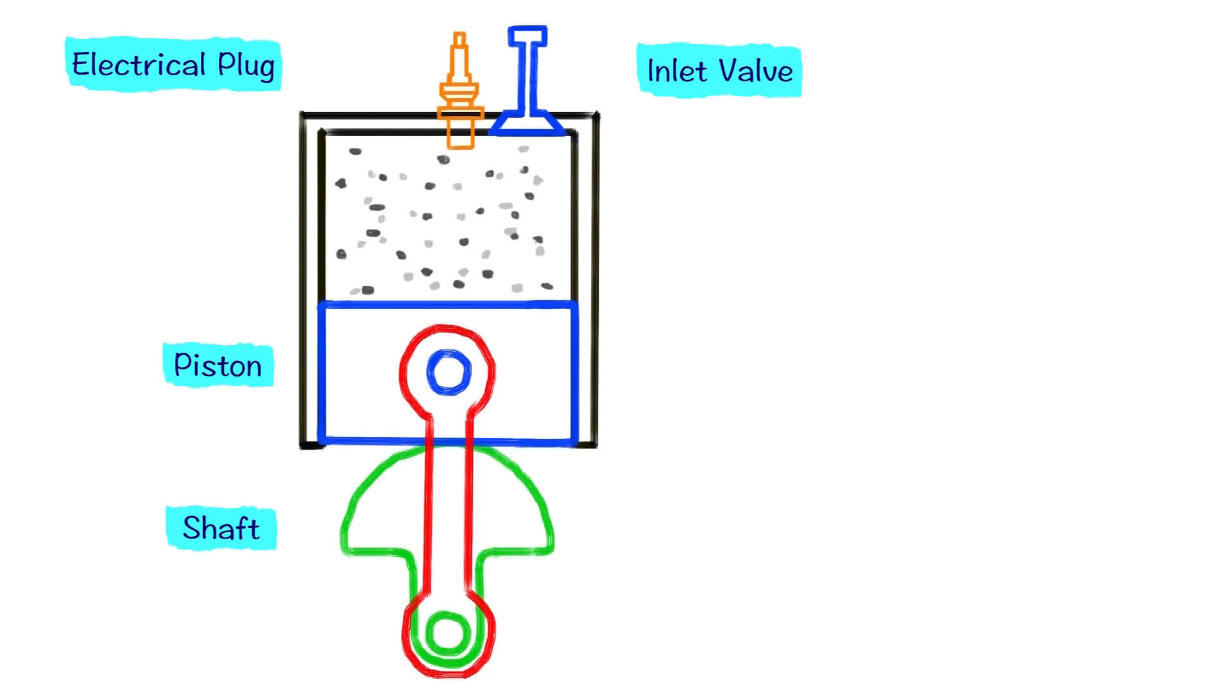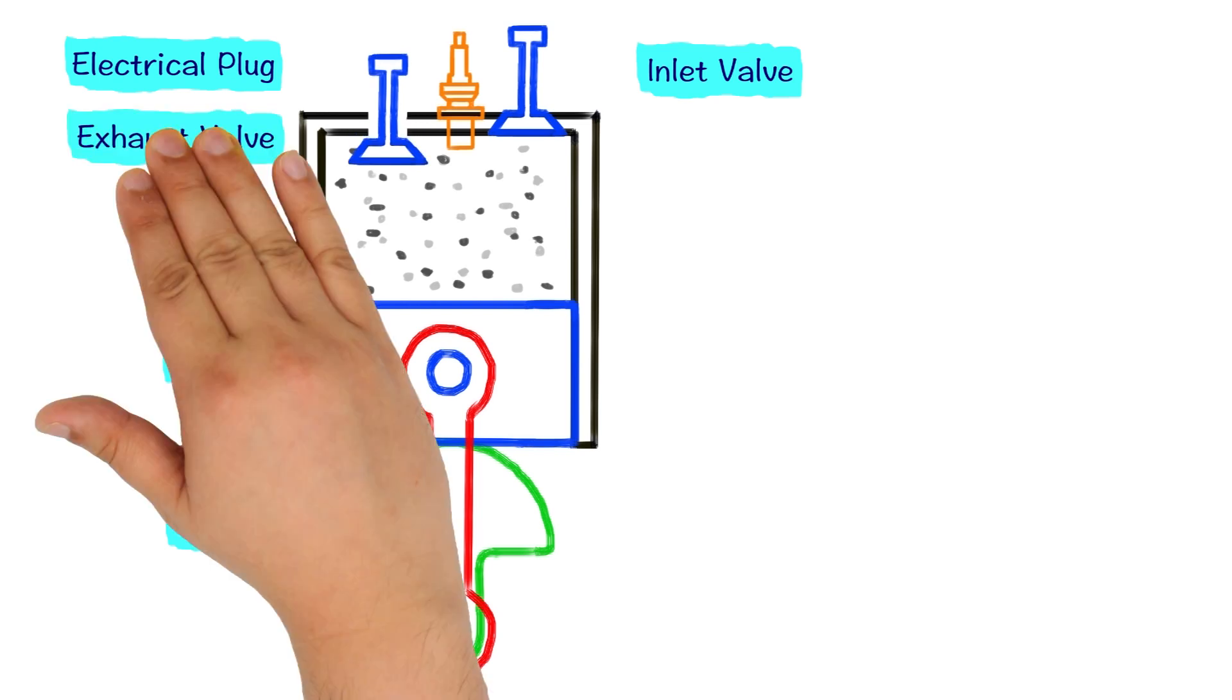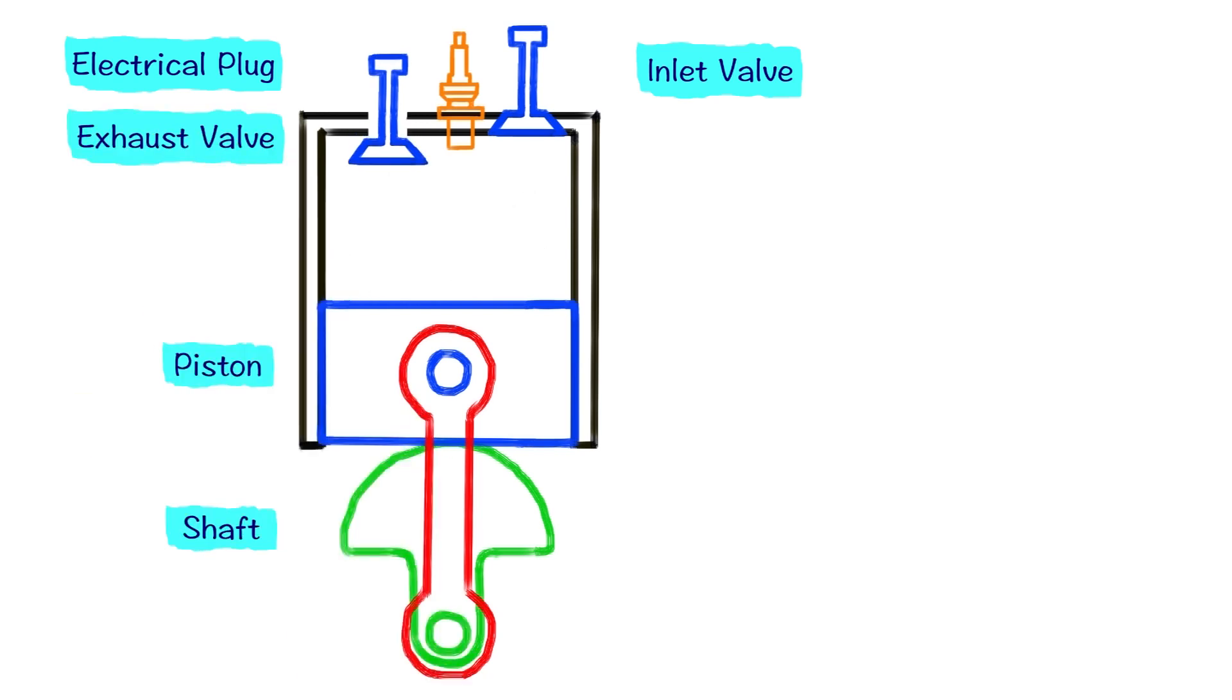So let's get rid of all these gases first. How can we do that? Well, we can design it in a lot of different ways, but let's just have another valve in the cylinder to get rid of all these gases. Let's put it here and we will call it the exhaust valve.